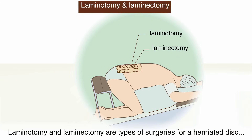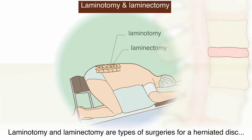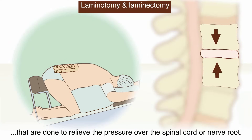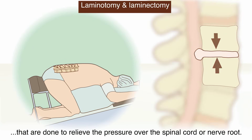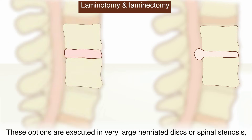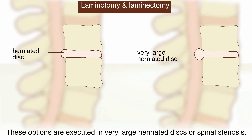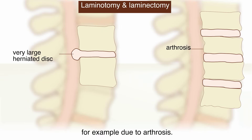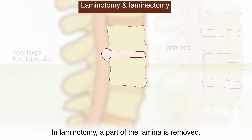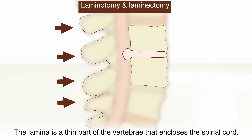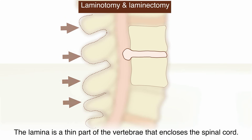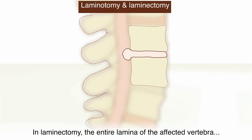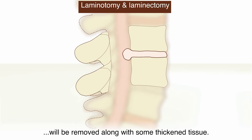Laminotomy and laminectomy are types of surgeries for a herniated disc done to relieve the pressure over the spinal cord or nerve root. These options are executed in very large herniated discs or spinal stenosis, for example due to arthrosis. In laminotomy, a part of the lamina is removed. The lamina is a thin part of the vertebra that encloses the spinal cord. In laminectomy, the entire lamina of the affected vertebra will be removed along with some thickened tissue.